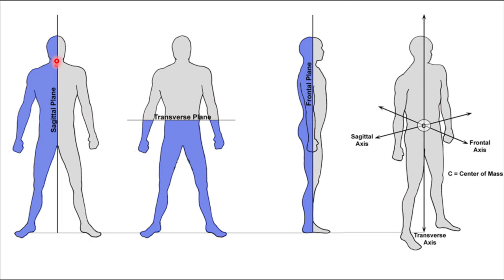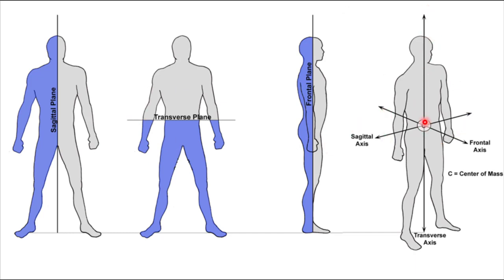The sagittal plane doesn't have to stop at the center — it can give you a sagittal slice through the left leg, through the shoulder, through the wrist. Same with the transverse plane — you can slice through the neck, the torso, the legs. When it's presented with planes through the center of mass, that's just static representation, but these planes can exist throughout any aspect of the body.